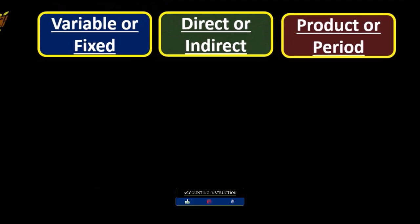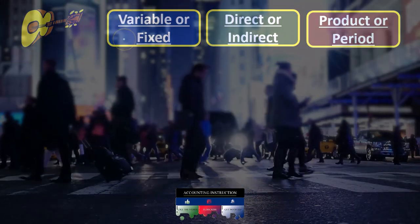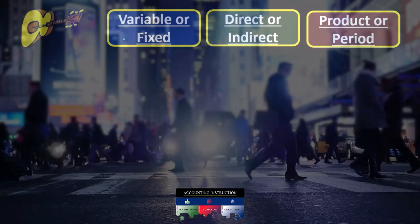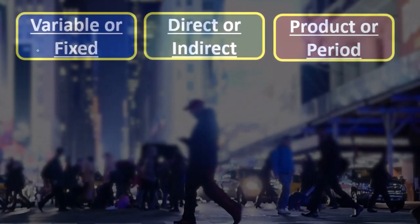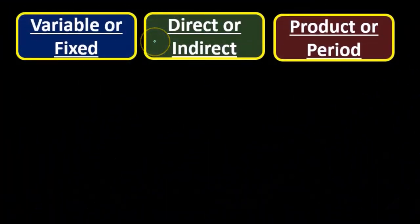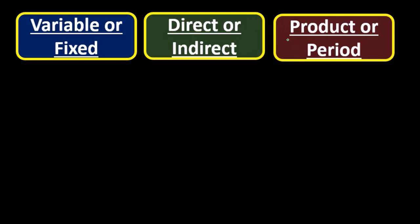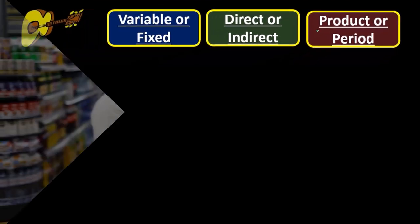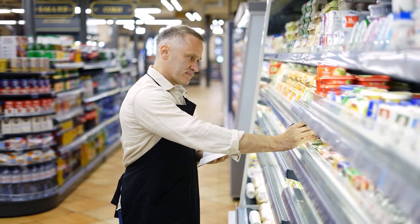Let's look at some examples and think about where they would go in these cost classifications. When we first learn this, some people learn some of these allocations better than others, but it's important to know all of them. Variable versus fixed is about cost behavior. Direct or indirect is about whether we can apply the cost to a particular unit or function. And product or period is really about whether we're dealing with the inventory-making process or non-inventory stuff — which is basically administrative and selling.